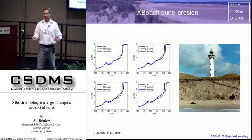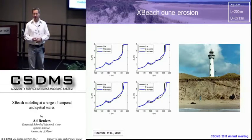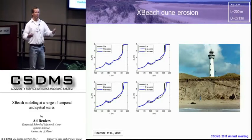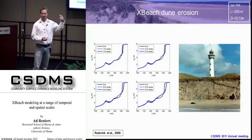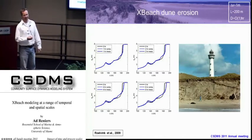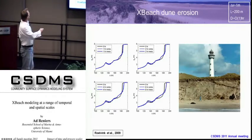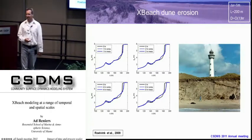To test the model, we compared it to a number of observations. This is an experiment that was performed in the delta flume in the Netherlands. It's a prototype flume, pretty large scale. We compared measurements with observations. The initial profile is in black, and then you see two blue lines — the dashed line is the model computation and the solid blue line is the observation. This is after one, two, four, and eight hours. Essentially, the model is very good at predicting dune erosion.